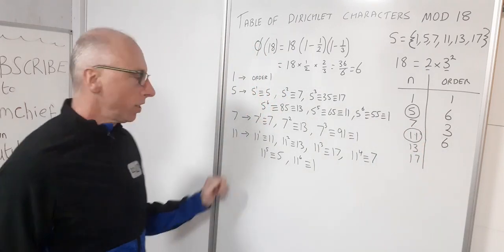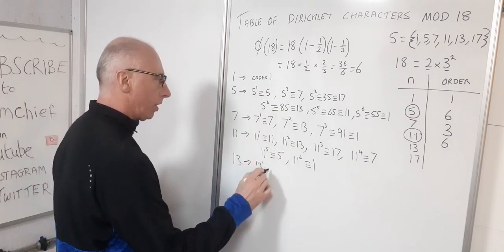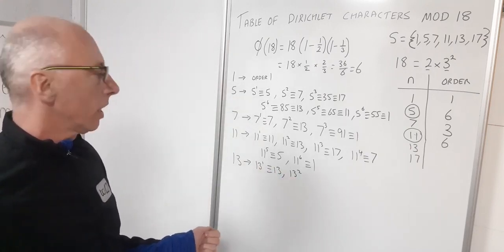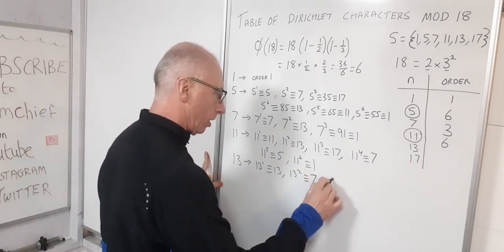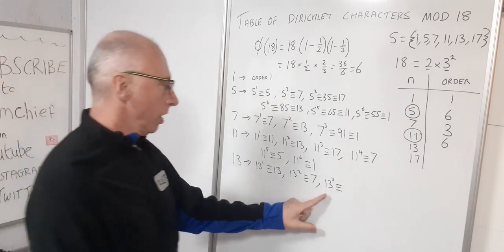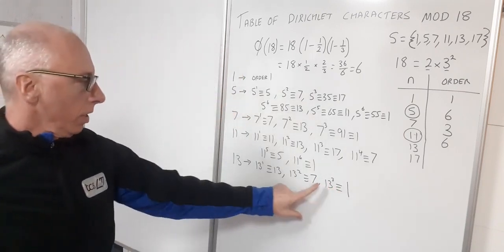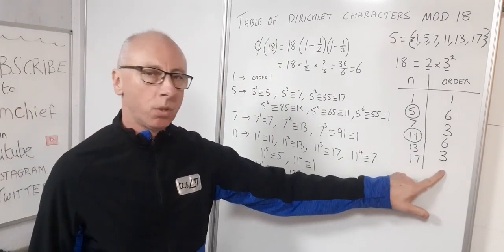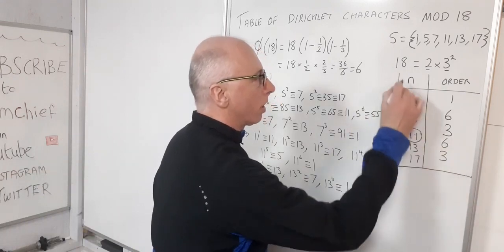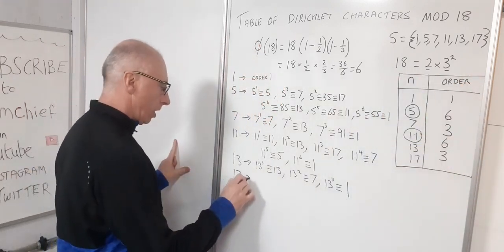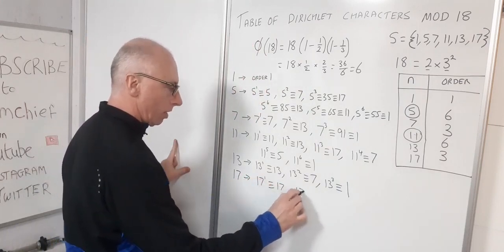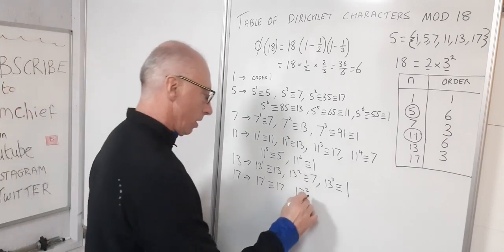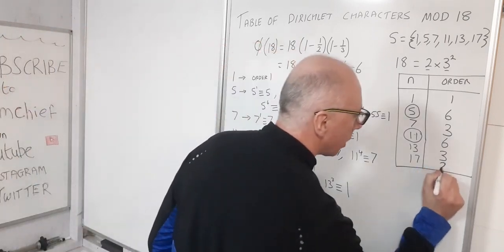For 13: 13^1 ≡ 13, 13^2 = 169 ≡ 7 (mod 18), 13^3: 7×13 = 91 ≡ 1, so 13 is of order 3. By the rules of groups, 17 must be of order 2. Let's check: 17^1 ≡ 17, 17^2 = 289 and 18×16 = 288, so 17^2 ≡ 1 (mod 18). Confirmed — 17 is of order 2.